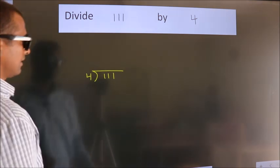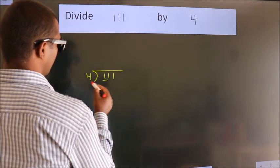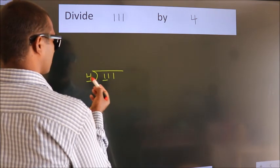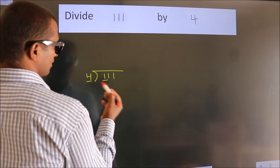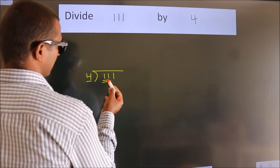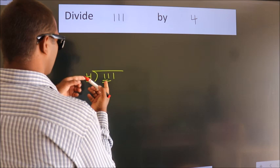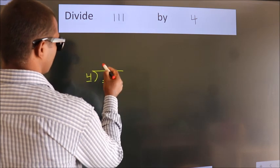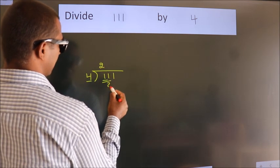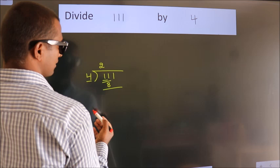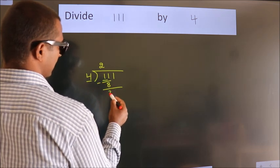Next. Here we have 1, here 4. 1 is smaller than 4. So we should take two numbers: 11. A number close to 11 in the 4 table is 4 times 2 equals 8. Now we should subtract. We get 3.